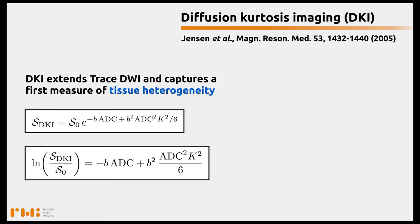I can rewrite this equation as the logarithm of the ratio between SDKI and S0. Here it becomes apparent that DKI is actually a two-term cumulant expansion. The first cumulant is minus ADC, and the second cumulant is ADC squared times K squared divided by 6.